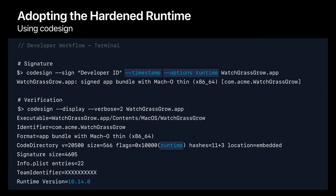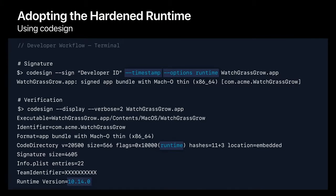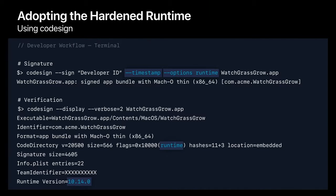To verify that you have adopted the hardened runtime correctly, use the --display option to codesign with a verbosity level of 2, and look for the word "runtime" in the flags section. Also note that the hardened runtime is versioned. When you sign with the hardened runtime, we record what version you were signing with, so that if we were to add additional protections to the hardened runtime in the future, we'll ensure that only the ones that your app has been tested with get applied on future systems.